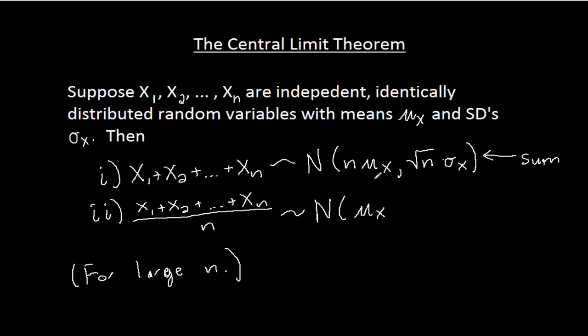right, because I just take that mean and divide by n. And then what's the standard deviation? Well, the standard deviation is going to be sigma sub x divided by the square root of n. Again, I'll just take the standard deviation and divide by n. And that's my central limit theorem for averages.